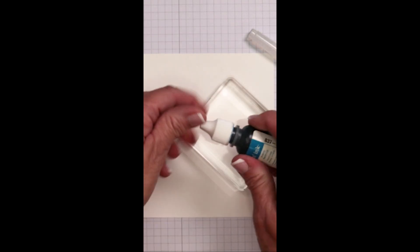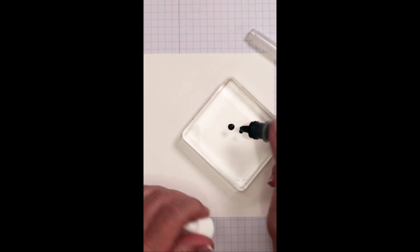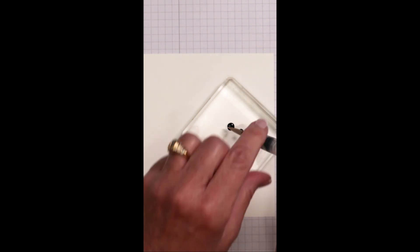The second way involves your ink refill. You're going to put one drop on a clear block. You're going to take your water painter or your paintbrush and you're going to squeeze water onto the block.